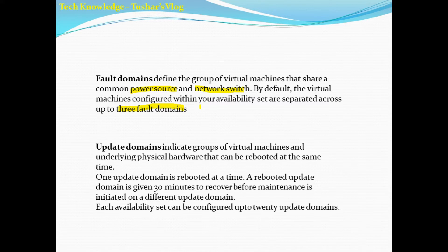With fault domains we are protected from hardware failure. But what if there is a software issue or a software update going on — are we protected? That's where update domains come in. Update domains indicate groups of virtual machines and underlying physical hardware that can be rebooted at the same time. One update domain is rebooted at a time, and a rebooted update domain is given 30 minutes to recover before maintenance is initiated on a different update domain. Each availability set can be configured with up to 20 update domains.